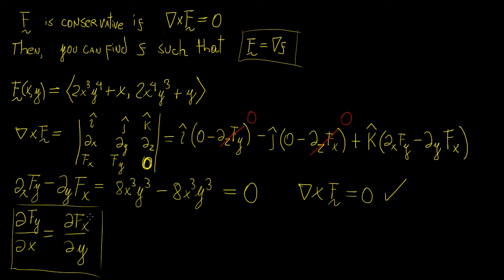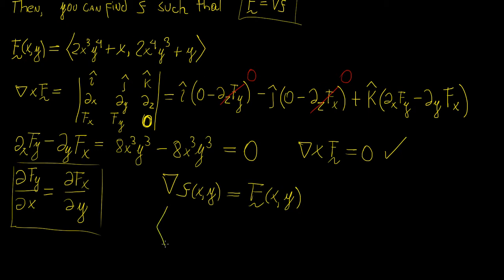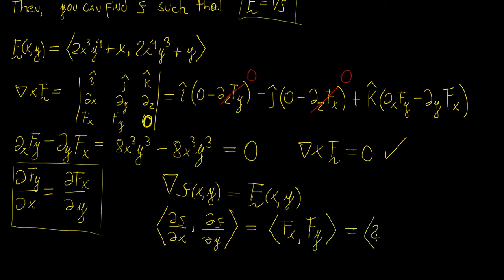Now that we know this vector field is conservative, we can find a scalar function such that the gradient of that function equals the vector field. We want to find scalar function f(x, y) such that its gradient equals the vector field F(x, y). This means matching terms: the partial with respect to x gives Fx = 2x³y⁴ + x, and the partial with respect to y gives Fy = 2x⁴y³ + y.